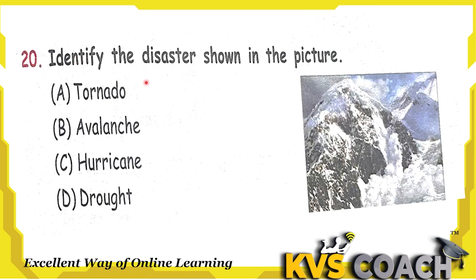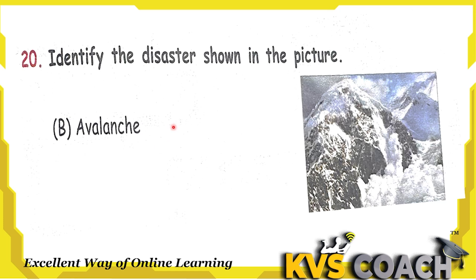Next question: identify the disaster shown in the picture. Option A, Tornado — a rotating column of air. Option B, Avalanche — yes, this is the rapid flow of snow; in the picture you can see snow flowing rapidly from mountains. Option C, Hurricane — a violent storm with high wind. Option D, Drought — shortage of water due to low rainfall. So the right answer is option B, Avalanche.